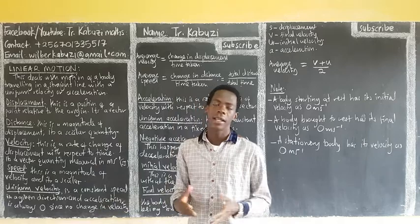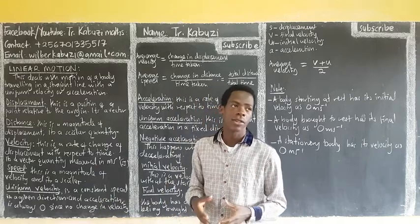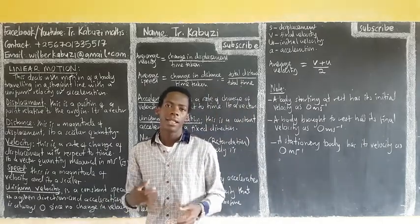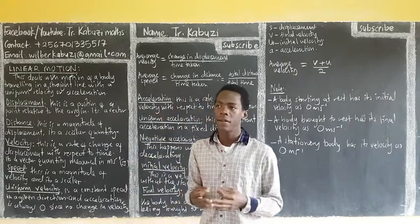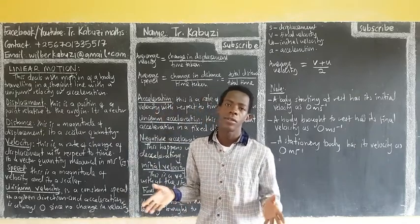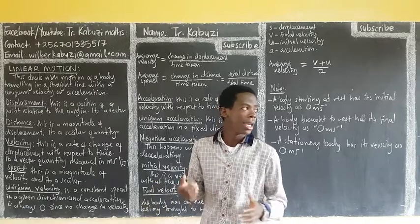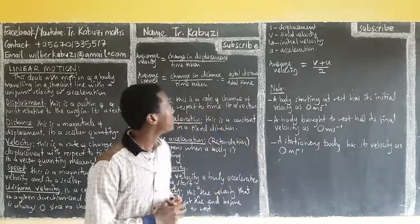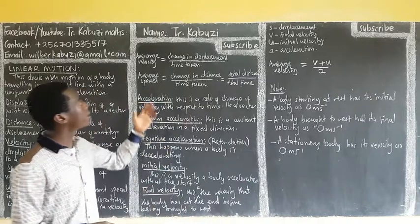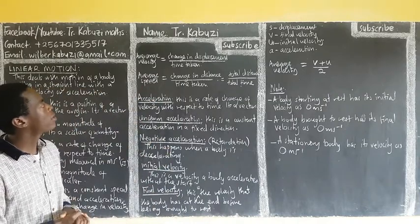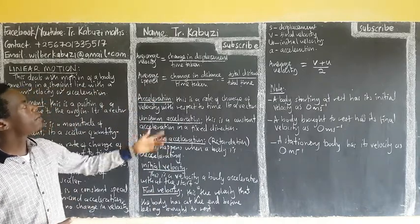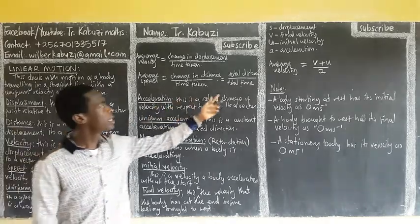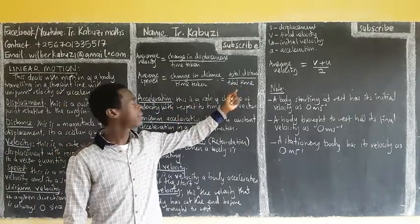Uniform velocity is a constant speed in a given direction, and acceleration is zero. Whenever you have uniform velocity, acceleration is zero because acceleration is the rate of change in velocity. If the velocity is uniform, there is no change, so acceleration will be zero. Average velocity is the change in displacement over time taken, and average speed is the change in distance over time taken — or in simple terms, distance over time taken.